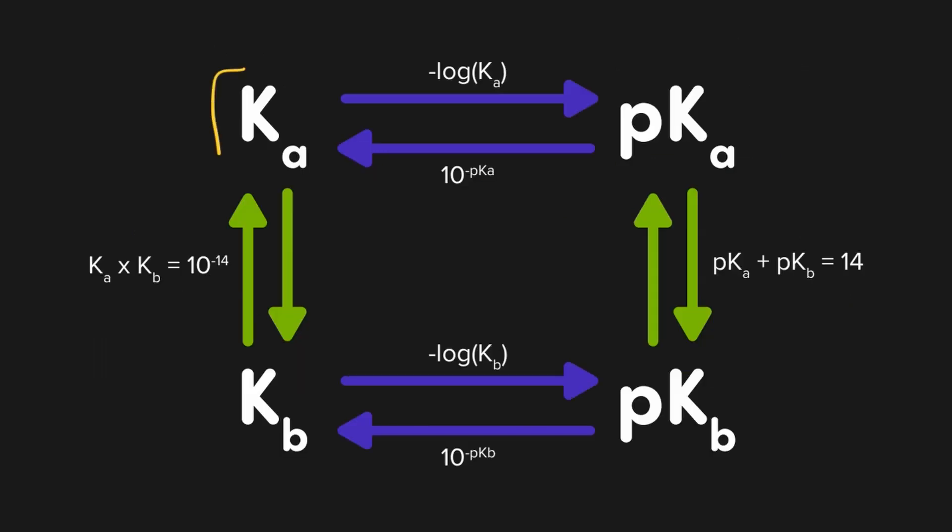But before we do that, let's talk about how we use the map by looking at our initial example going from Ka to pKb. To start, mark out where you're starting with and where you want to go. Now, following the arrows, draw a line between the two values. In this instance, we have two paths, one that converts from Ka to pKa to pKb, or from Ka to Kb to pKb.